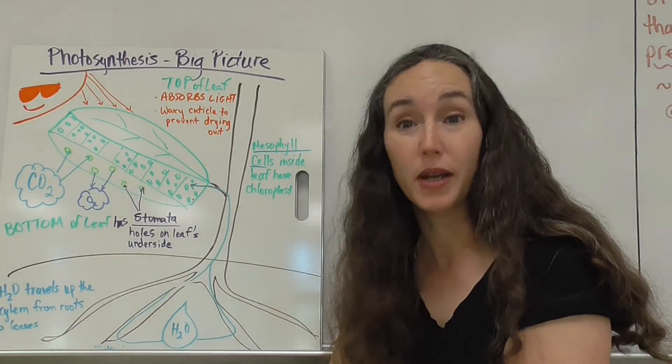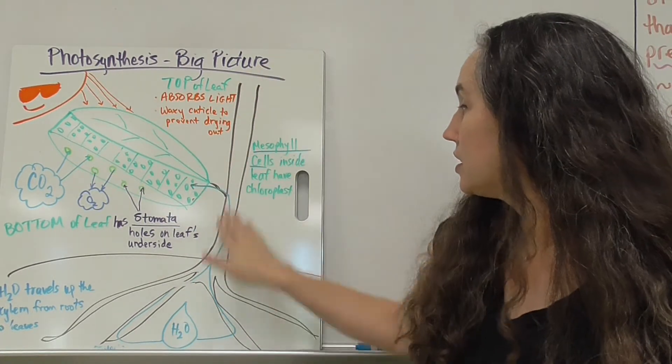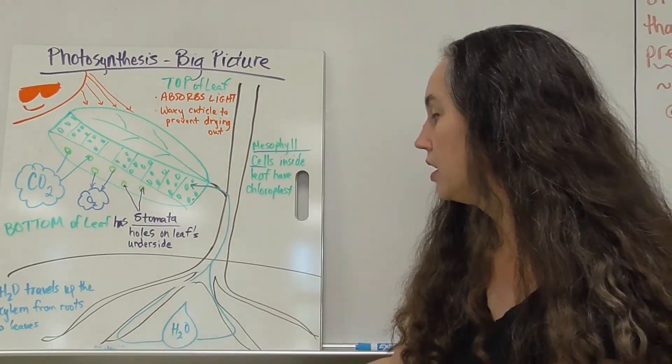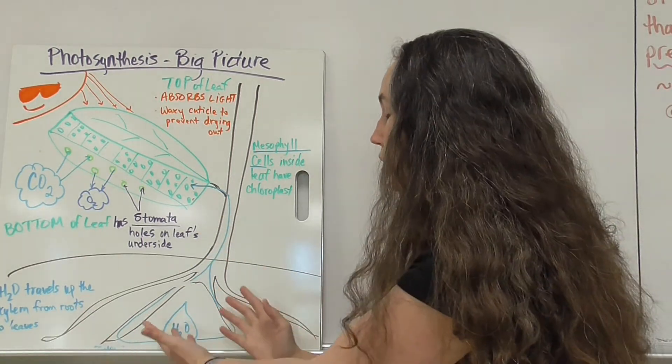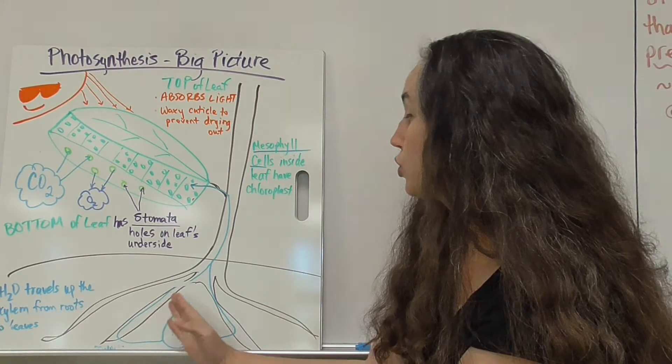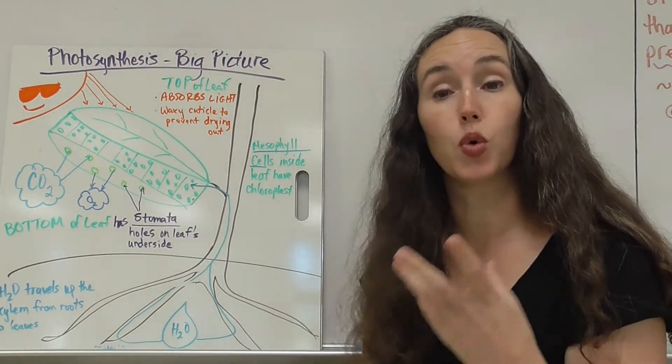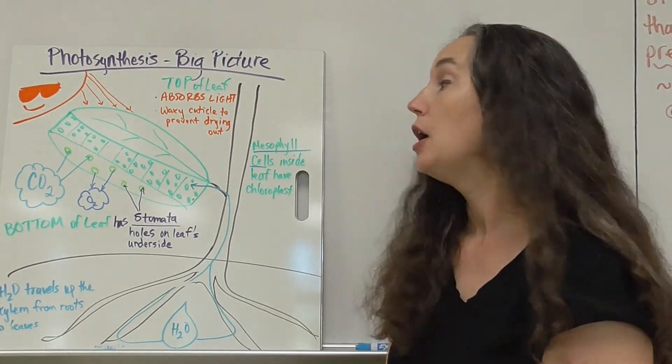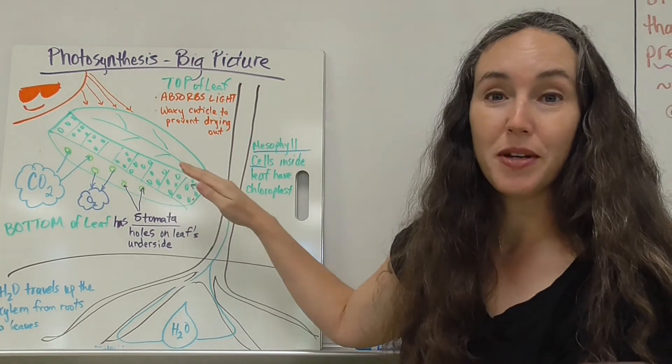Here's the big picture of photosynthesis. If this is a plant with leaves, stems, and roots, roots are going to absorb water by osmosis, and then water is going to travel up the xylem, up the stem, into the leaves. Leaves are where the majority of photosynthesis happens, because the cells of the leaves are where chloroplasts can be found.